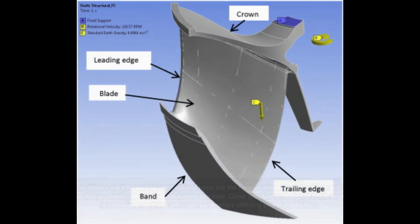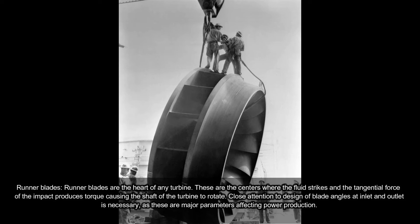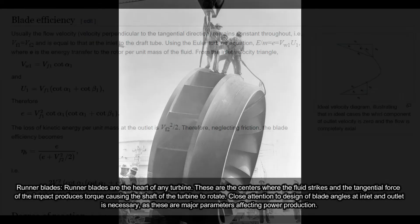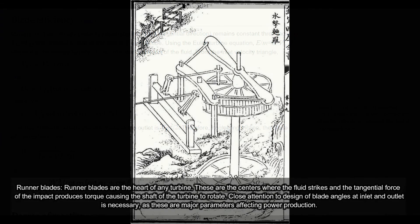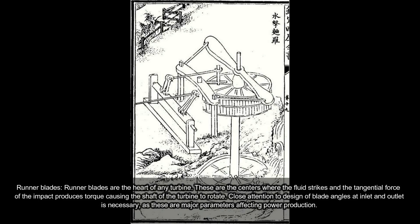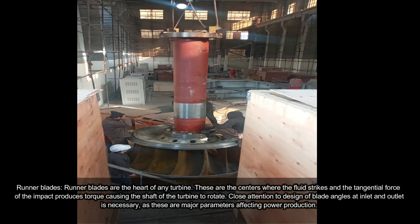Runner blades are the heart of any turbine. These are the centers where the fluid strikes and the tangential force of the impact produces torque, causing the shaft of the turbine to rotate. Close attention to the design of blade angles at inlet and outlet is necessary, as these are major parameters affecting power production.